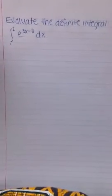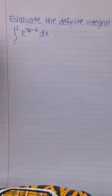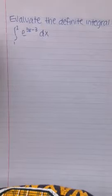The problem to be solved is evaluate the definite integral from 1 to 2, e to the 3x minus 3 dx.